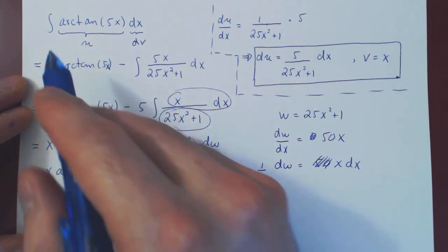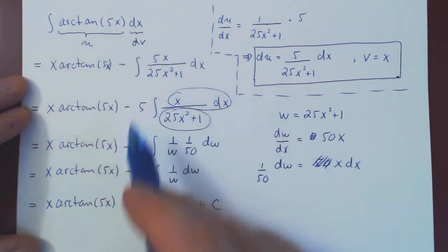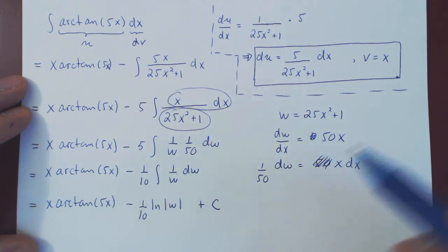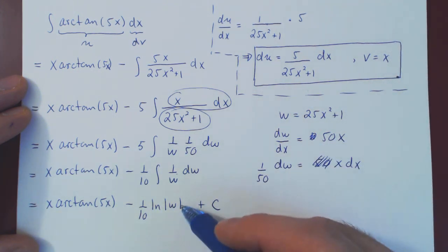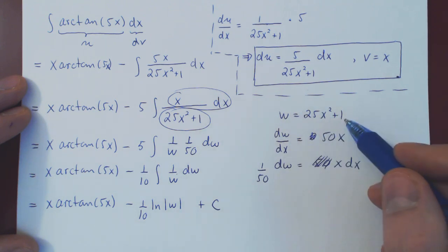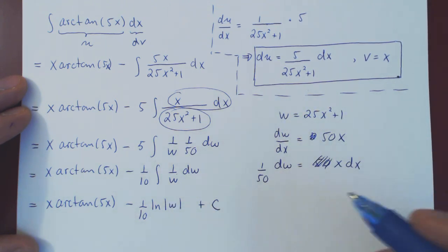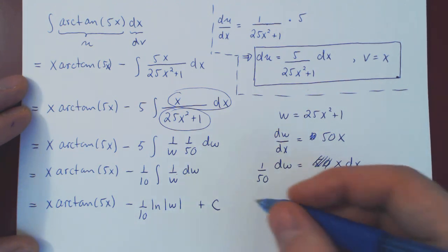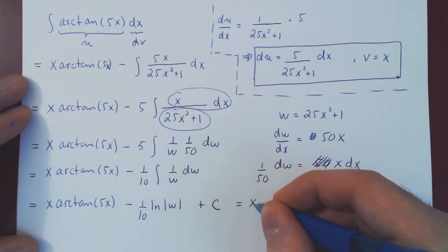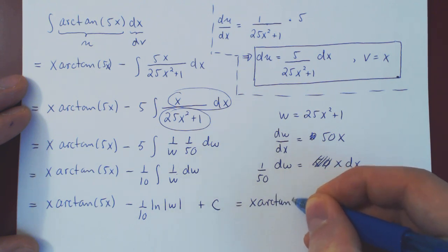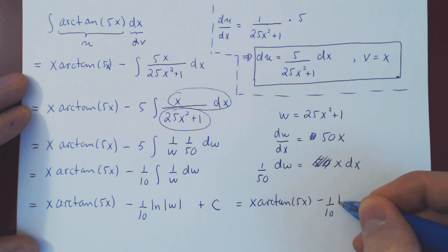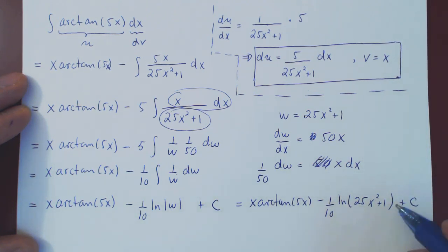And we add the arbitrary constant of integration. But don't forget that since we had initially an integral with respect to x, the final answer must be a function of x exclusively. So we must replace w by 25x squared plus 1. As this is always positive, we can drop the absolute value. And so the final answer is x arctangent of 5x minus 1 over 10 ln of 25x squared plus 1, of course, plus c. And so we're done.